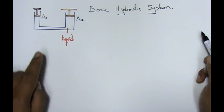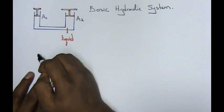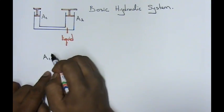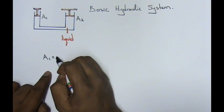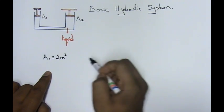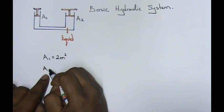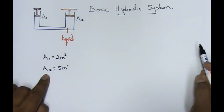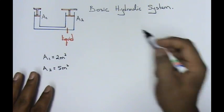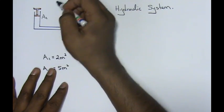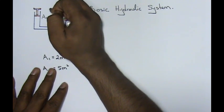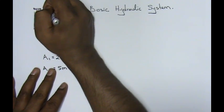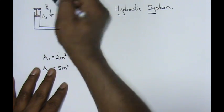And I'm going to also put in the forces. A1, which is the area, I'm going to keep it over here as 2 m², and A2, which is slightly bigger, I'm going to keep it as 5 m². Now, let's just say that I am pushing over here the piston A1 moving downwards, I'm going to put it as F1.